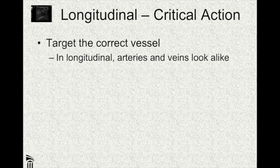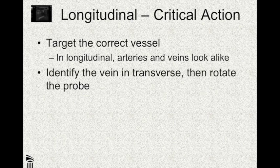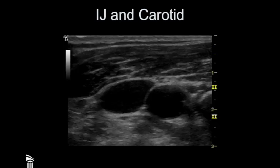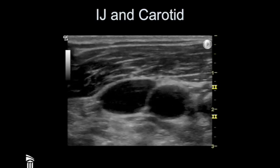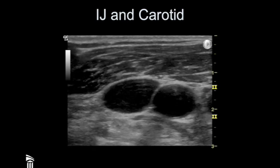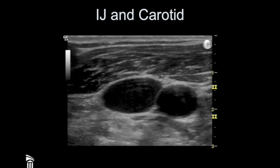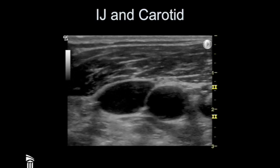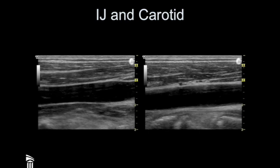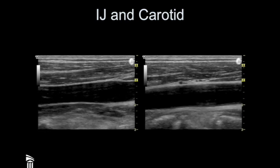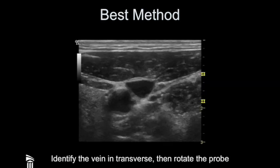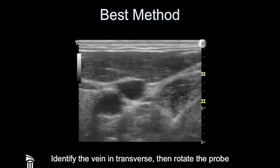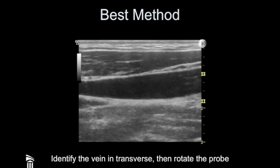If you're going to do longitudinal, the most important thing is to make sure you're going for the vein and not the artery. In longitudinal, the artery and the vein look exactly alike. The best way is to identify the vein in transverse and then rotate the probe. In transverse, it's easy to tell the IJ from the carotid — the carotid is a high-pressure vessel, so it's mostly round, compared to the internal jugular which is lower pressure and not round. In longitudinal, however, they look very much alike, and note that they both pulsate. The safest way is to find the IJ in transverse, then rotate your probe keeping it on screen, so you know you're going for the right vessel.